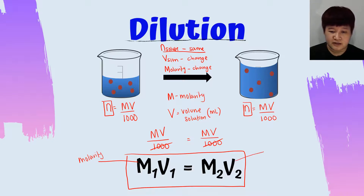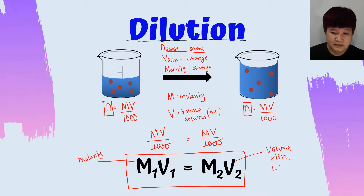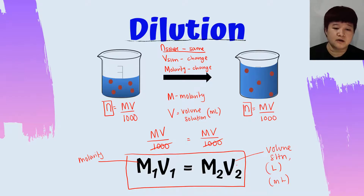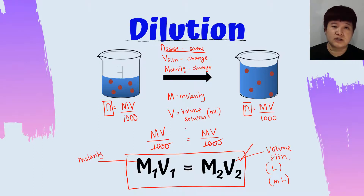V is the volume of solution. In this case the volume can be in litres or in millilitres, with one condition: V1 and V2 must be in the same unit. That is all about dilution — a very simple formula of M1V1 = M2V2. Let's look into a simple example.